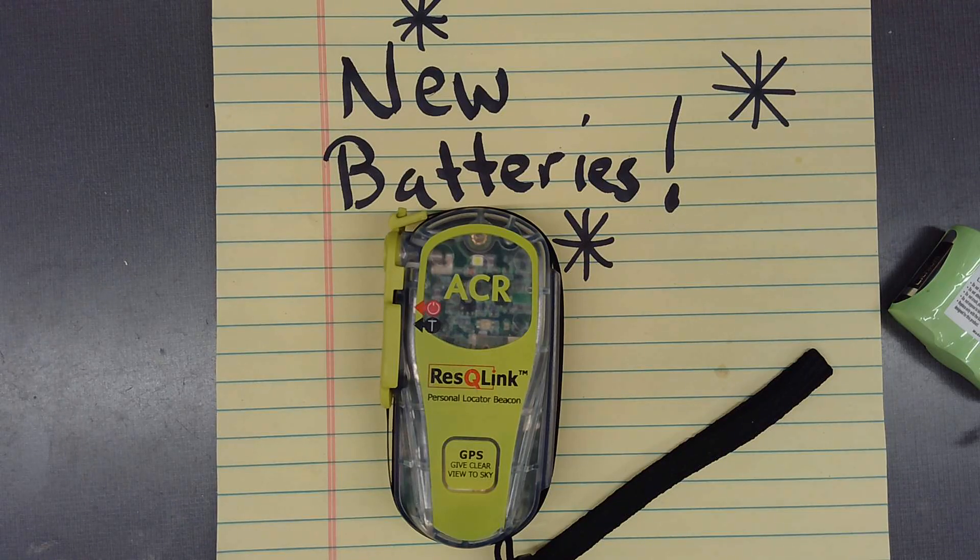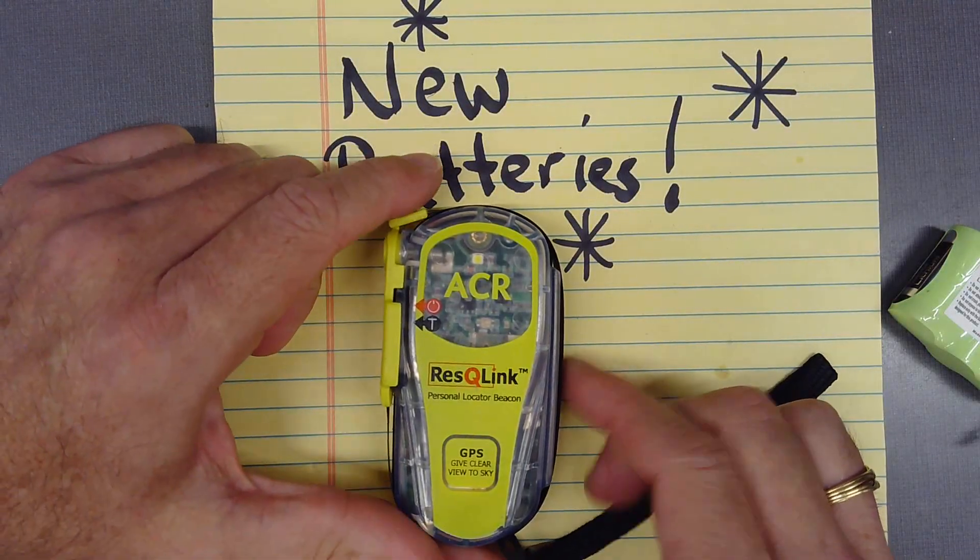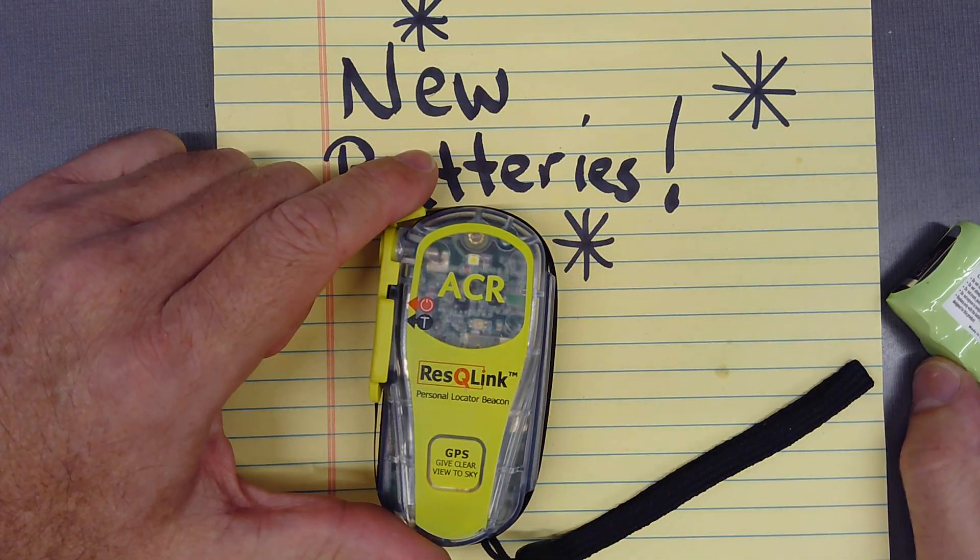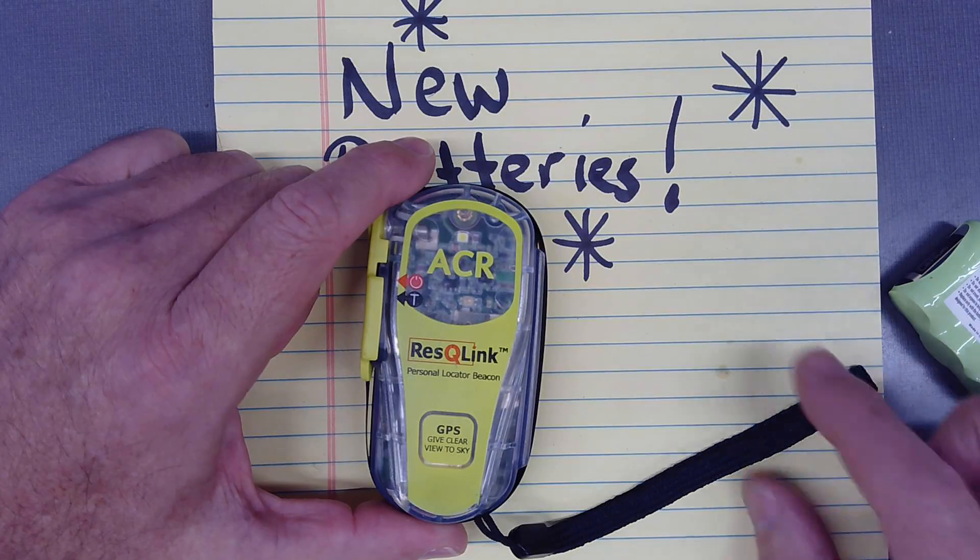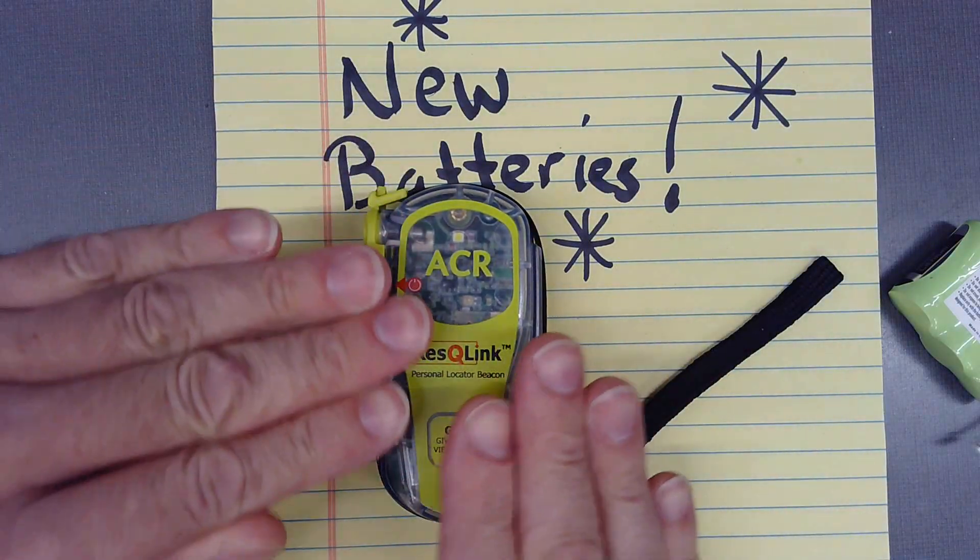So if we have our Distracto Meter set, that's two distractions from the original video, I hope you're still with us. If you're not, there are plenty of other good ACR Rescue Link battery replacement videos out there that have a lot less clutter and fluff in them. So let's stay with it. We'll try to stay focused on this.